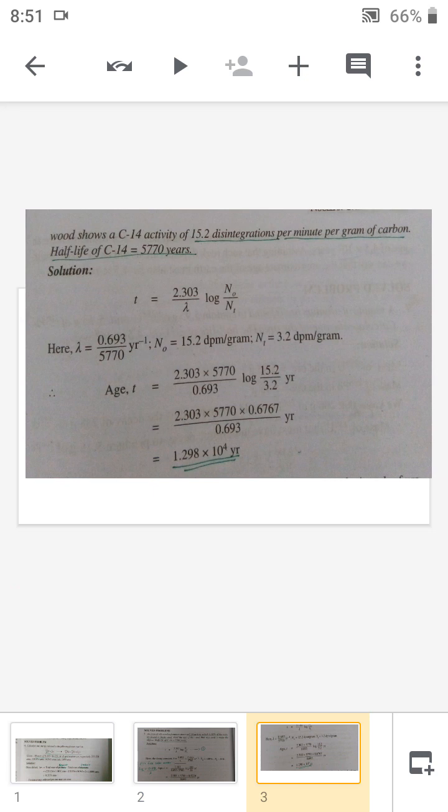As we discussed in the last problem, we know that the equation is t equals 2.303 divided by lambda times log N₀ by Nₜ. Instead of percentage, they are given the disintegration value of both the archaeological sample and the fresh sample, so substitute these values directly. Lambda can be calculated by 0.693 divided by t-half.